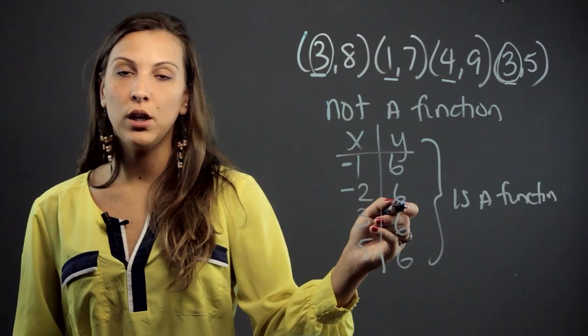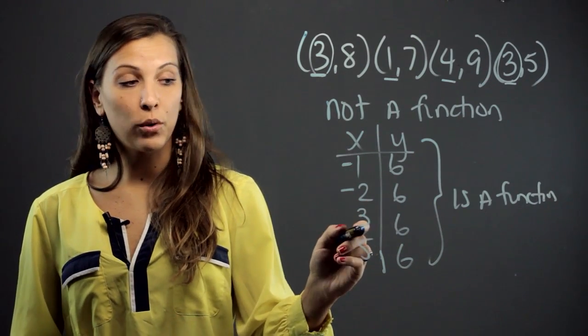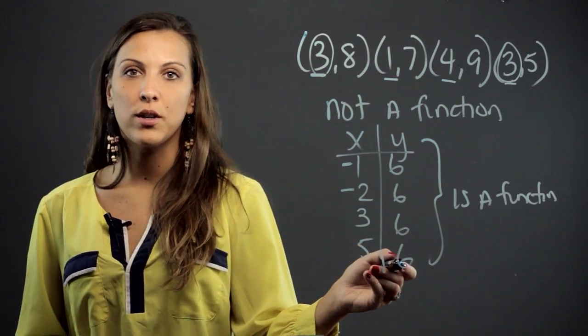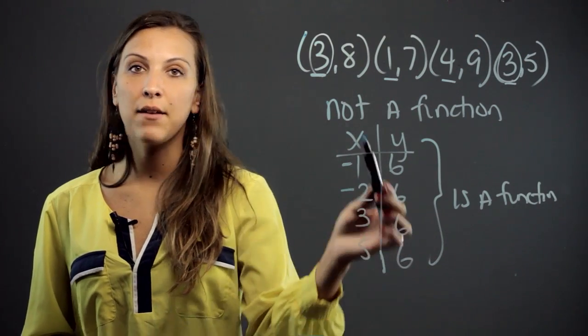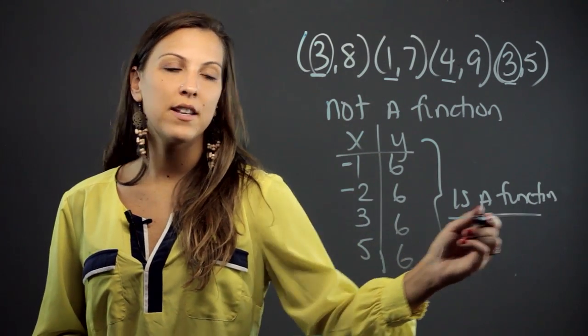Negative two only corresponds to six. Three only corresponds to six. And five only corresponds to six. The x's never double up. Therefore, this one is a function.